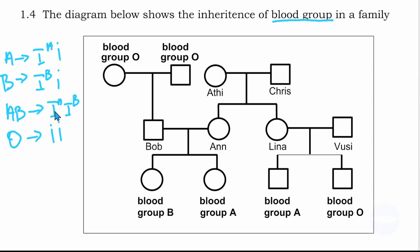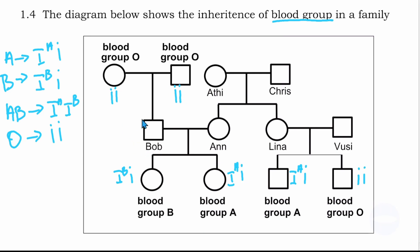I will quickly write all the genotypes of the individuals we are given and then analyze the pedigree. If you look at the parents of Bob, they are both blood group O. Therefore, Bob got one allele from his mother and one allele from his father. Since they are both blood group O, that means Bob is also blood group O. And since we know the genotype of Bob and the genotype of all his children, we can find the genotype of his wife.